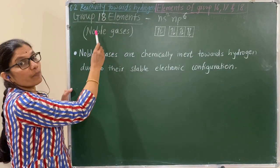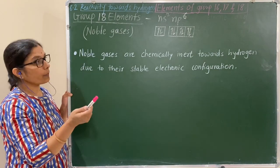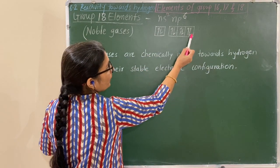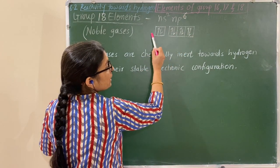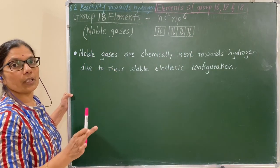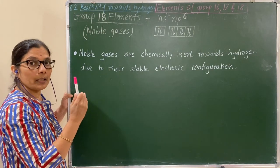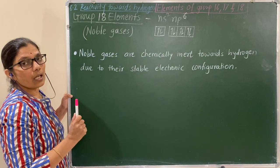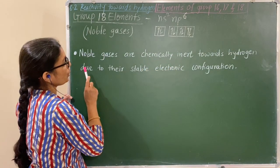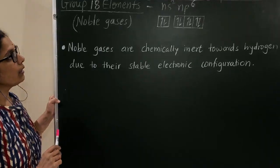Group 18 elements are the noble gases: helium, neon, argon, krypton, xenon, and radon. They have completely filled orbitals, giving them a stable electronic configuration. Therefore, they do not react with hydrogen — noble gases are chemically inert towards hydrogen due to their stable electronic configuration.